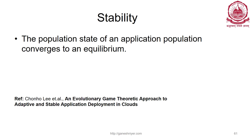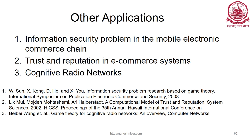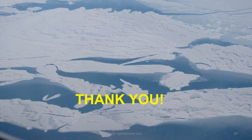The intention of this presentation is to give a high-level introduction to how evolutionary game concepts are used in computer science, covering one example from computer networks and another from cloud computing. There are many other applications including cognitive radio networks, security in mobile e-commerce, and trust and reputation in e-commerce systems. Reference papers are provided for interested viewers. Thank you.